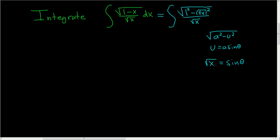Now we have to differentiate both sides, but we have this square root, so it's better to square both sides. If you square the square root of x, you just get x, and if you square the sine function, you get sine squared theta. Taking the derivative of both sides, dx is equal to — using the chain rule — 2 sine theta times the derivative of the inside, which is cosine theta, times d theta.